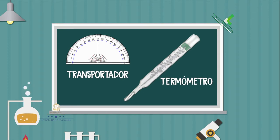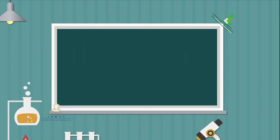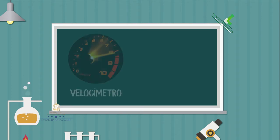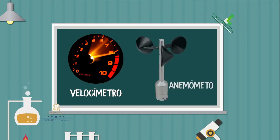Las mamás siempre tenemos por lo menos un termómetro en la casa. Para medir la velocidad de un móvil está el velocímetro. En cambio, para medir la velocidad del viento tenemos el anemómetro.